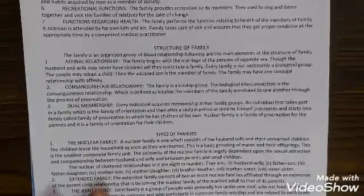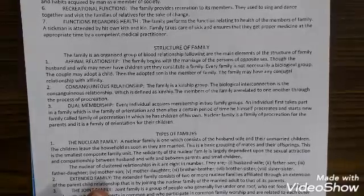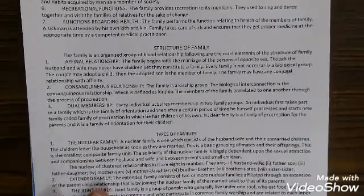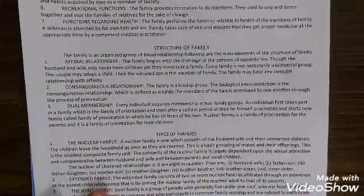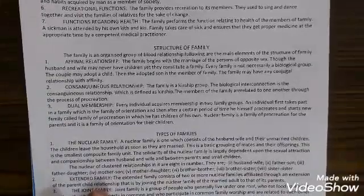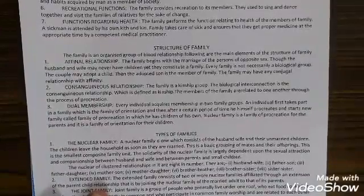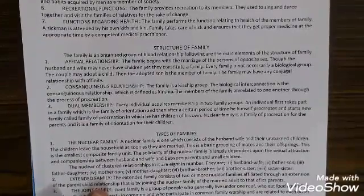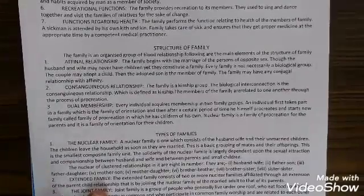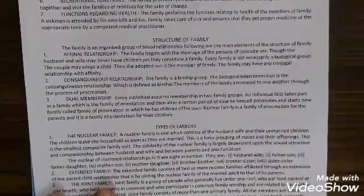The second element of the structure of family is consanguineous relationship. The family is a kinship group. Kinship means blood relatives. The biological interconnection is the consanguineous relationship — biological interconnection among persons is said to be the consanguineous relationship, which is defined as kinship. The members of the family are related to one another through the process of procreation, meaning giving birth to the future generation.